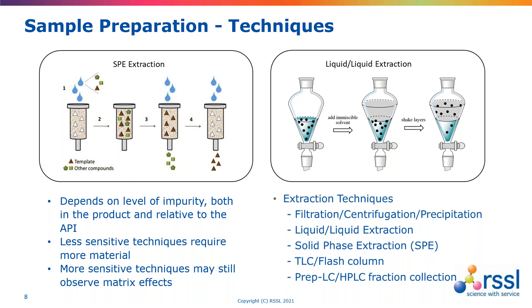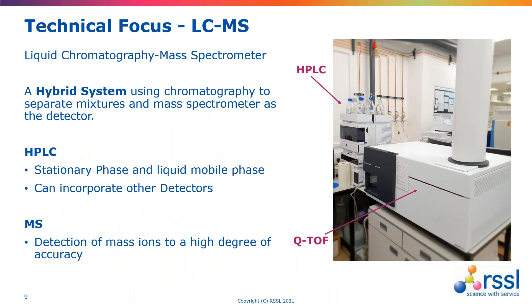We should also remember that older techniques such as TLC (thin layer chromatography) and flash column chromatography, although old school, are also incredibly useful. We can also go for more advanced techniques such as preparative HPLC, which allows us to take advantage of HPLC separation capability on a much grander scale. This applies especially with the combination of liquid chromatography and a mass spectrometer — our wonderful LC-MS QTOF here at RSSL — a hybrid system taking advantage of chromatographic separation and mass spectrometric detection.